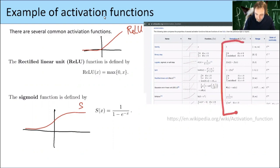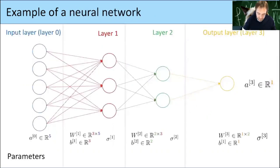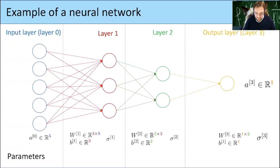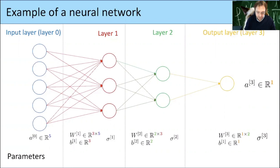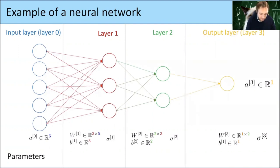At the end of last time, we gave an explicit neural network example, and I want to make sure all notation is clear. In this case we have four layers: an input layer, two hidden layers in the middle, and an output layer. In the input layer we have five input values, so A0 is in R5. The first hidden layer has three neurons.